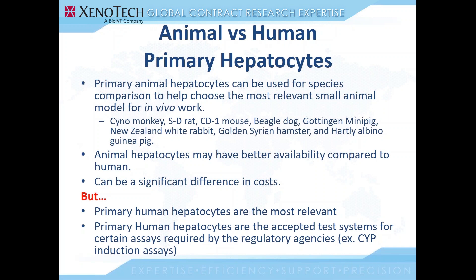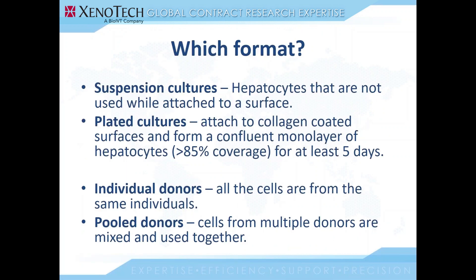While animal hepatocytes are very useful and have some advantages over human hepatocytes, the human hepatocytes are still the most relevant and accepted test system of regulatory agencies for certain assays like CYP induction assays. As we drill down further and get past some more intuitive choices of primary hepatocytes, I want to explain the various formats a little more, because it's at this point where the choice in hepatocytes can make or break an experiment, as not all hepatocyte formats are suited for all assays.